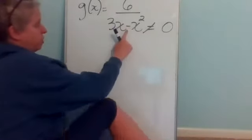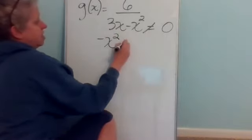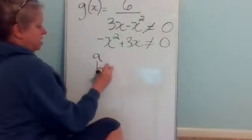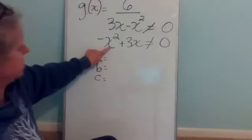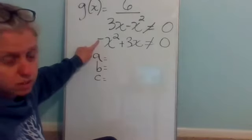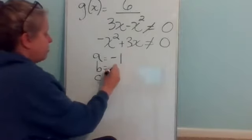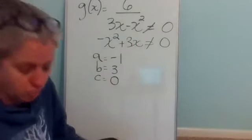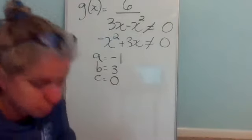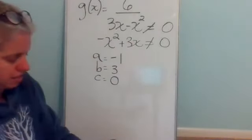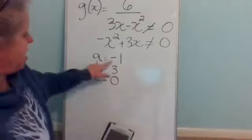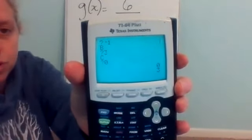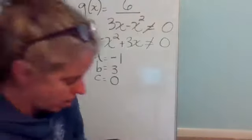So when I do quad, A is the number in front of X squared, which is negative one. B is the number in front of X, which is positive three. And since there's no constant, C is zero. Going to quad, I type in A, B, and C: negative one, three, and zero. Those are your two solutions: zero and three.